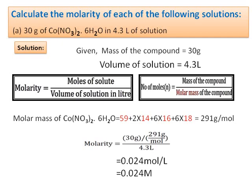Molarity = 30 g ÷ 291 g/mol ÷ 4.3 L = 0.024 mole per liter, also written as 0.024 molar.